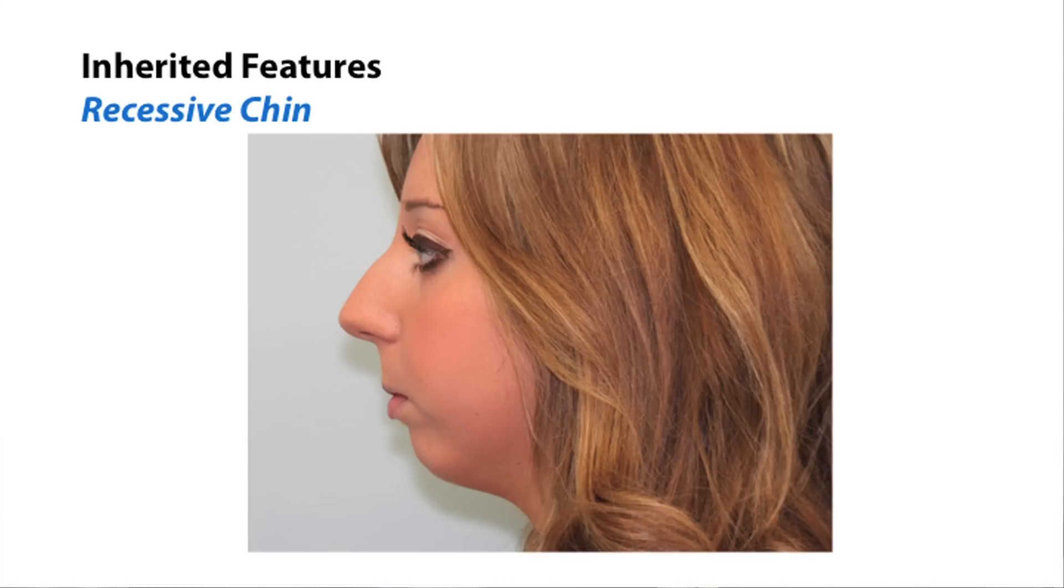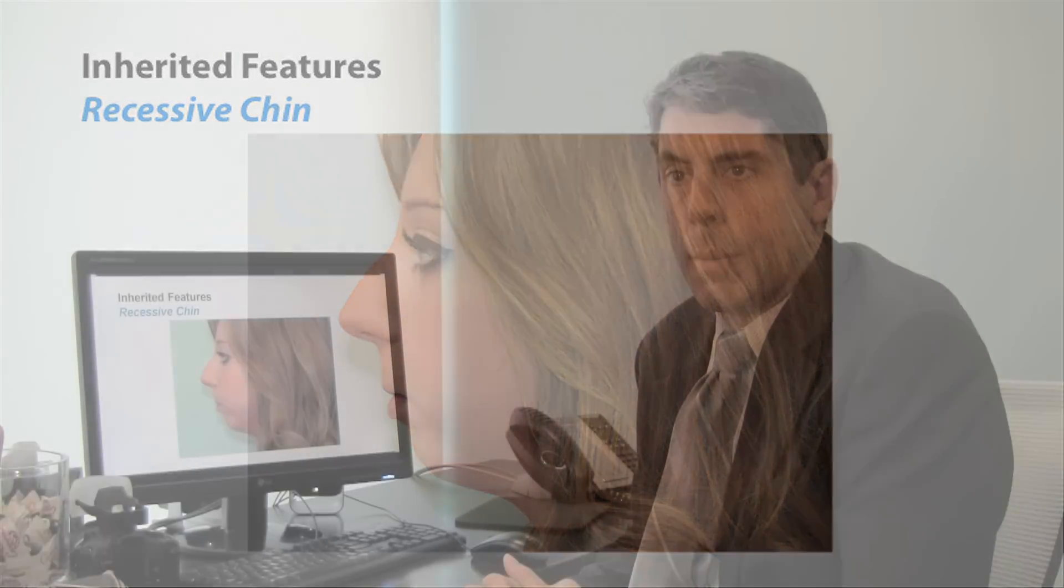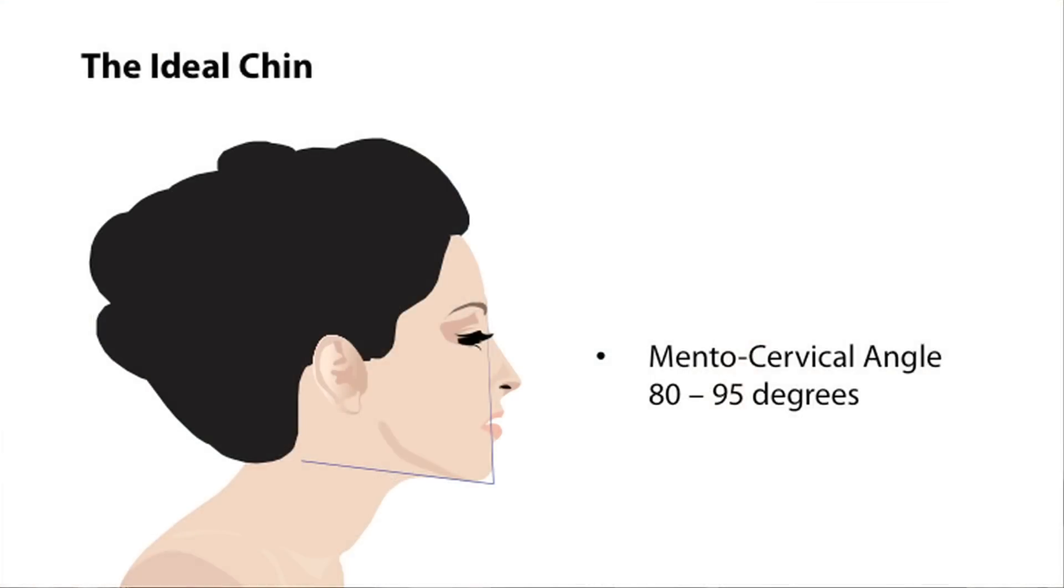Now in this situation, this patient has a chin that is probably sitting back 7 or 8 millimeters from where it should be ideally. With the ideal chin, the angle between the horizontal neck and vertical face is between 80 and 95 degrees.